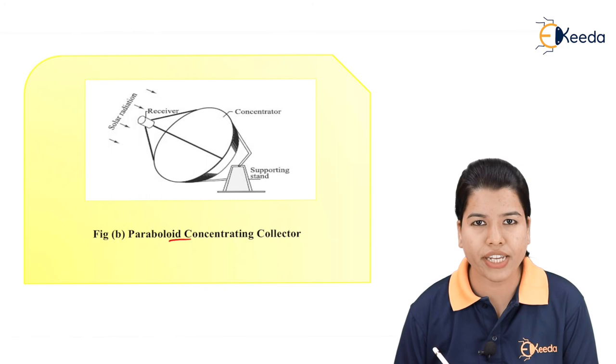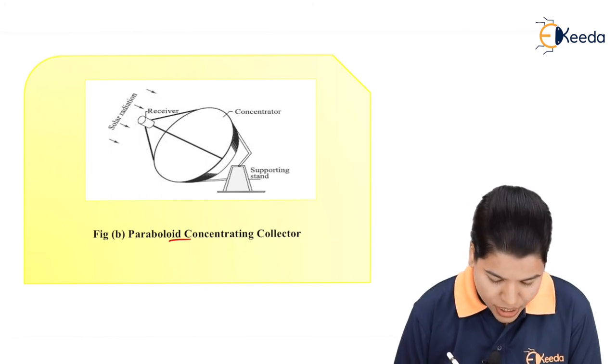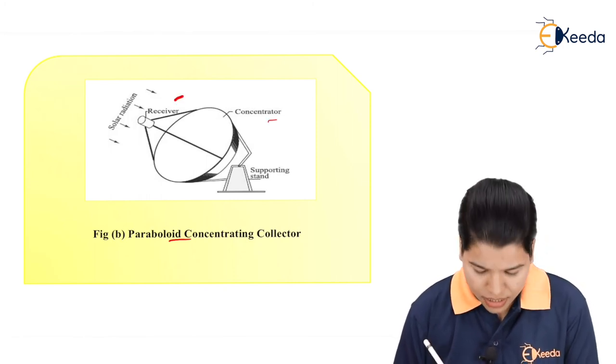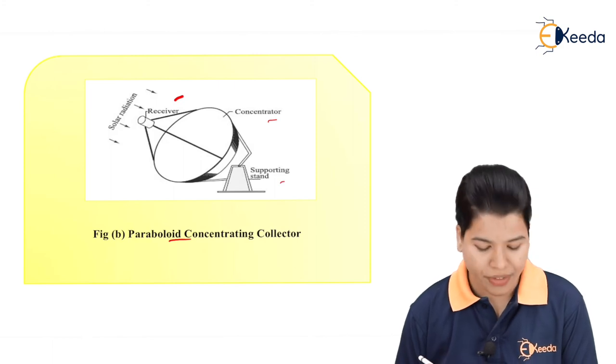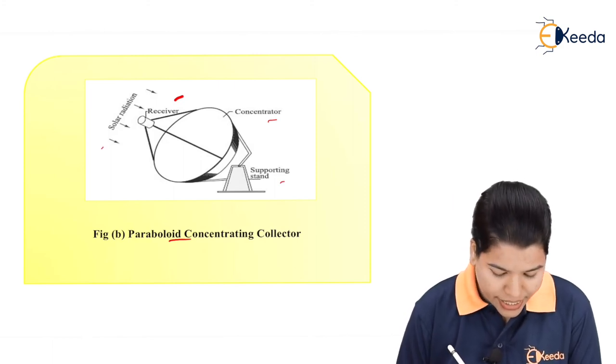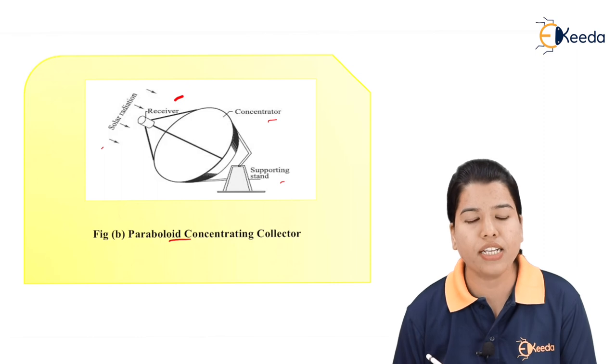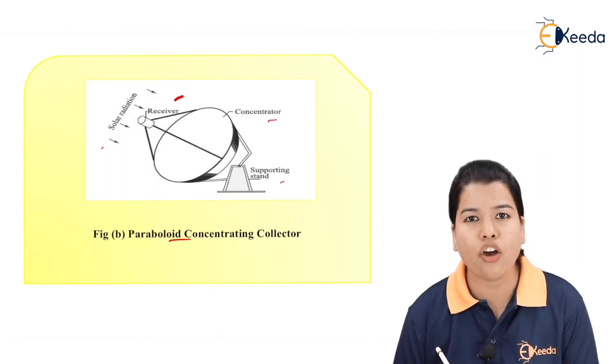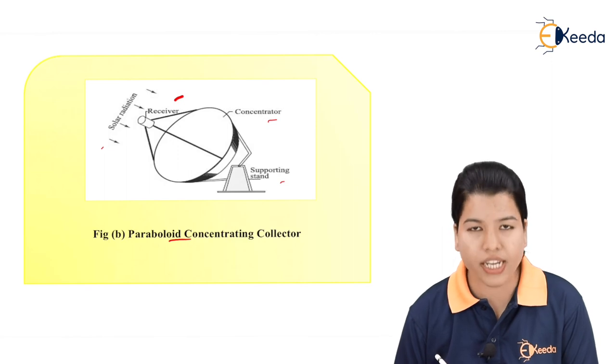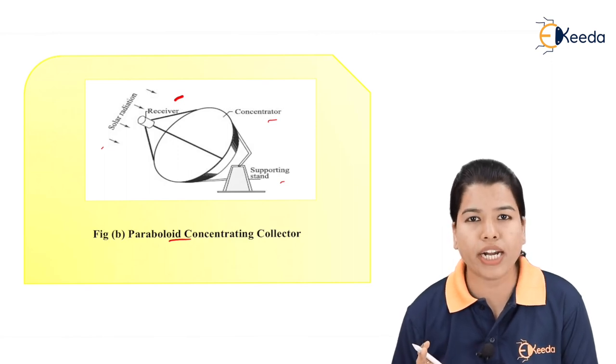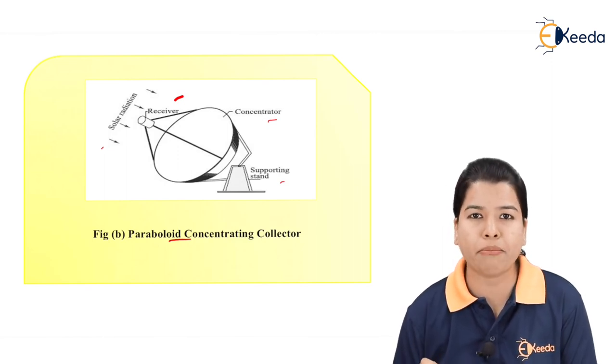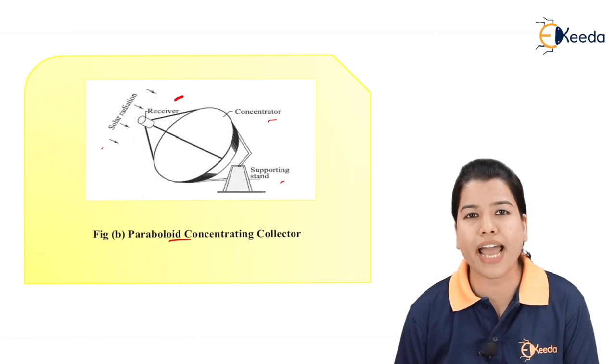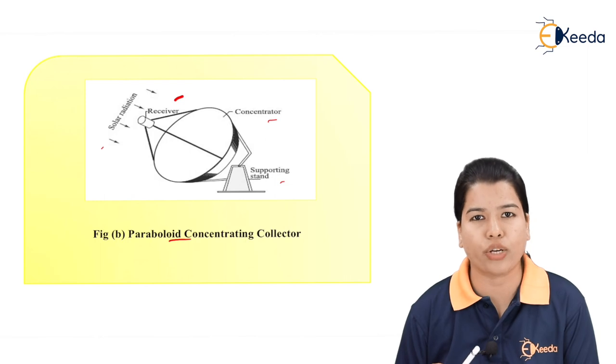Let us see what are the various parts. Here we have one receiver, then there is one concentrator and we have one supporting stand. As we can see, the solar radiations are incident on the receiver. Receiver will receive the solar radiation and it will be concentrated on the absorber. Here as the shape is of parabola type, the maximum radiations can be absorbed. As the sun direction changes, the tracking will be done as this is of the rotating type.